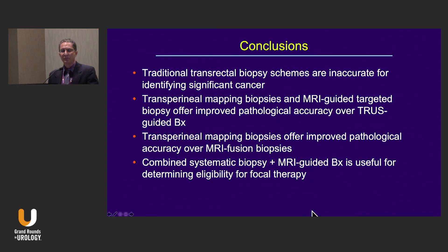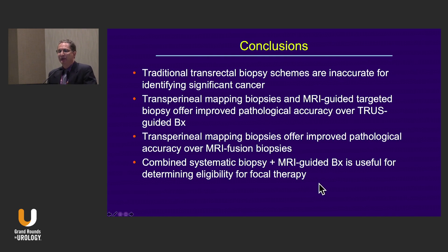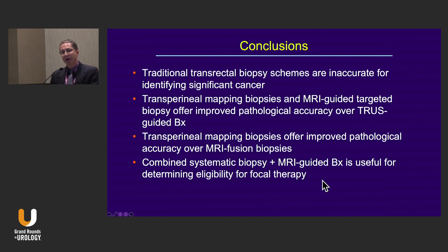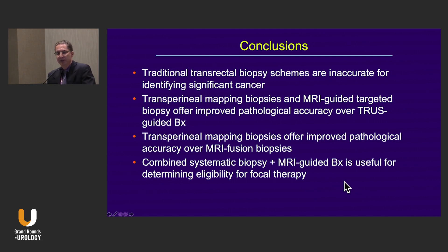In conclusion, traditional transrectal biopsy schemes are terribly inaccurate for identifying significant cancer, and we've known that for years. Transperineal mapping biopsies and MRI-guided targeted biopsies offer improved pathological accuracy over TRUSS-guided biopsies. Transperineal mapping biopsies do offer improved pathological accuracy over MRI fusion biopsies as shown by today's data, but the combination of the two seems to be the most useful in determining eligibility for focal therapy.